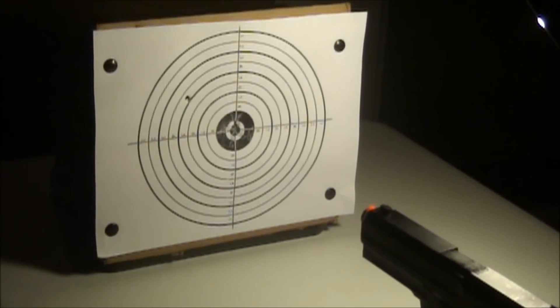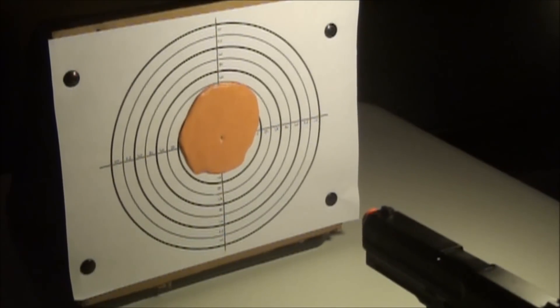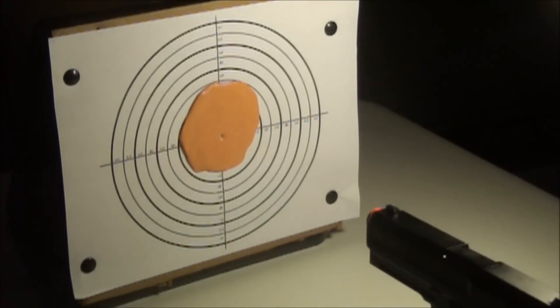See how the BB punctures the paper normally. Now watch as the Silly Putty is shot and how it prevents the BB from puncturing the paper.